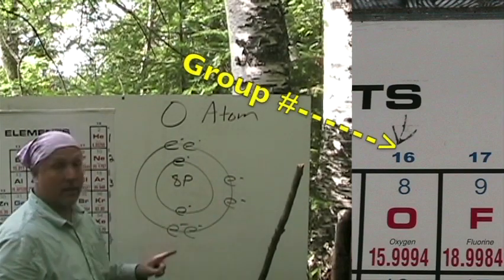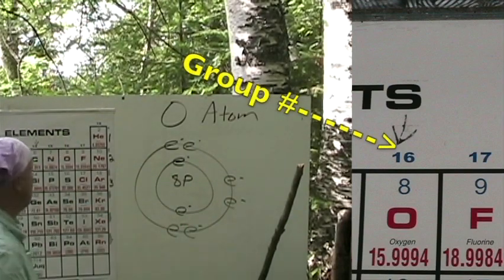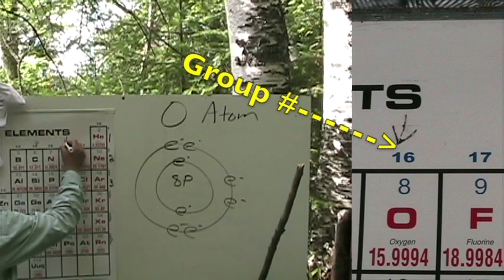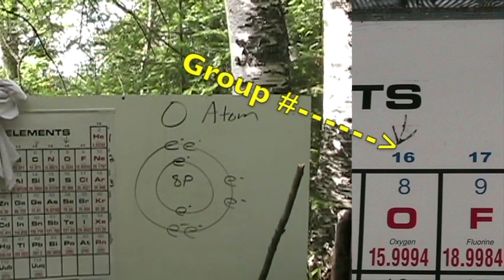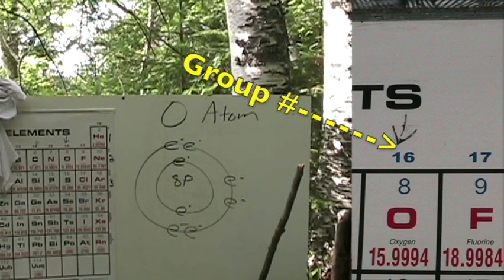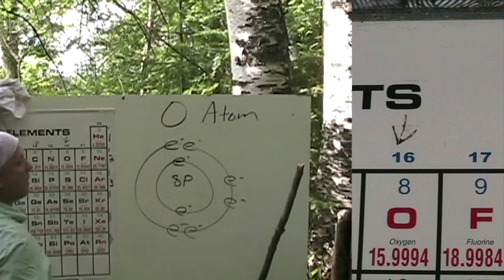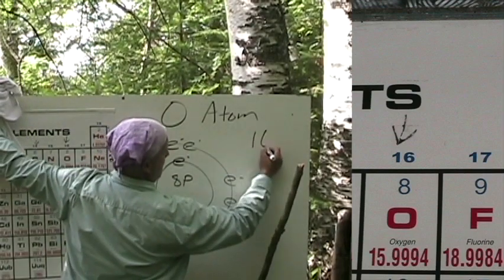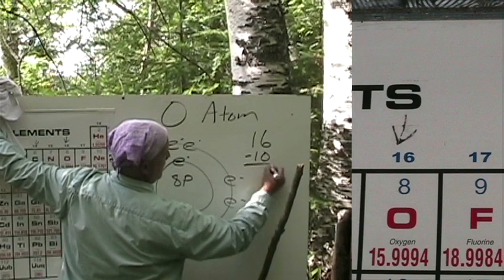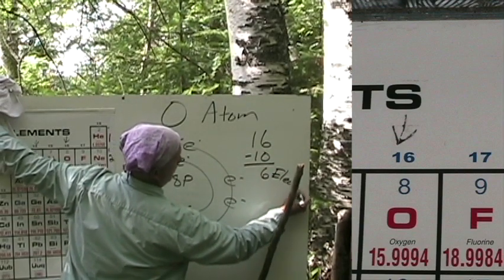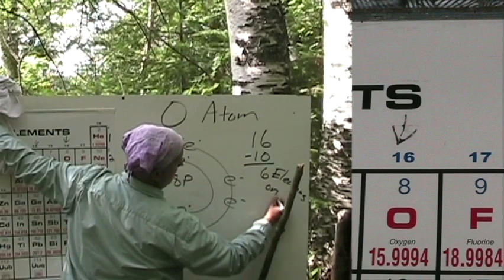One, two, three, four, five, six. We can determine this by taking a look at the group number here. It's 16. You can just take a look at the last number of one and six, which is six, and that's going to tell you how many electrons are on the outer shell, or you can take 16 minus 10 equals six electrons on outer shell.